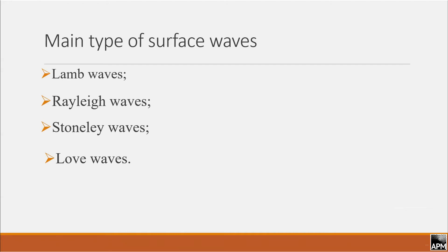Lamb waves are elliptically polarized in the sagittal plane, which is formed by the normal to the wavefront and surface of the layer, and propagate in separate layers. Rayleigh waves travel in a half space with the same polarization as Lamb waves, decaying with depth.